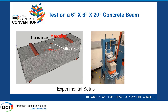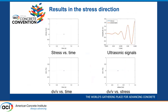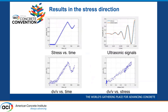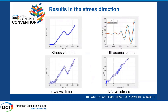In the four-point bending test on the concrete beam, the ultrasonic transducers were attached on the same surface, and a strain gauge was used to record the strain and calculate the stress on the top surface. This slide shows the whole process of data processing. The top-left figure shows stress versus time, and the bottom-left figure shows the relative velocity change versus time. After correlation, the bottom-right figure shows the linear relationship between relative velocity change and stress. The top-right figure shows the stressed signal and the reference signal.